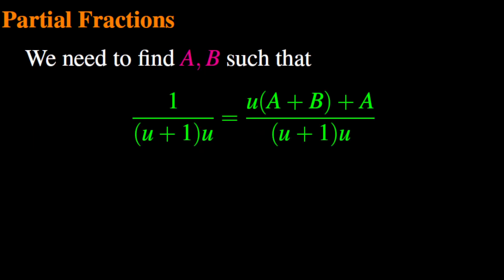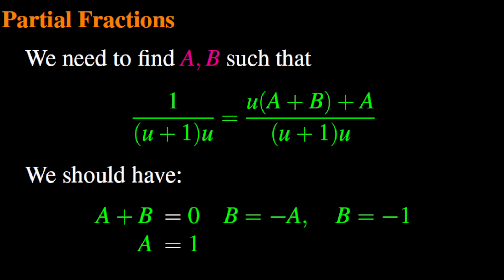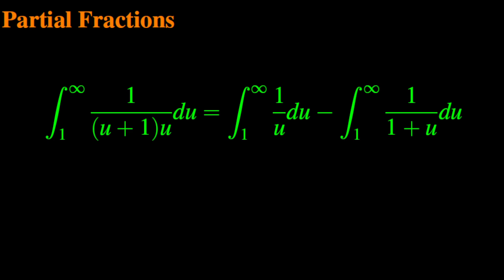The next step is to expand the numerator of this new fraction. The numerator of the new fraction is u times the quantity a plus b, plus a, and its denominator is still u times u plus 1. This gives us the following system of equations: a plus b equals 0, and a equals 1. When we solve the system, we easily find that a equals 1 and b equals negative 1. Now that we have the values of a and b, we can simplify the expression of the integral.